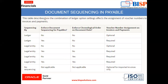This table describes how the combination of ledger option settings affects the assignment of voucher numbers to invoices and payments. There are three options — ledger, legal entity, and no sequencing — under sequencing by. You can see all permutations and combinations of how enforce document sequencing and enforce chronological order on document date will affect the voucher number assignment. By this, you can complete the first step of specifying ledger option.